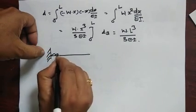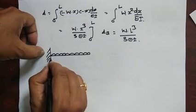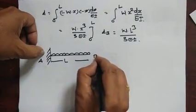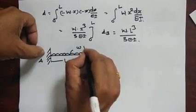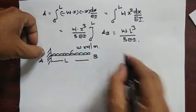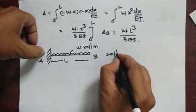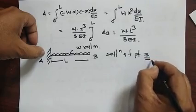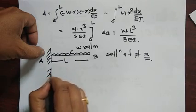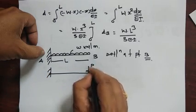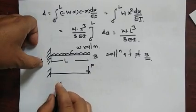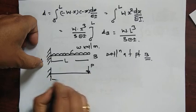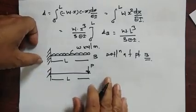Now we take another example. Suppose a cantilever beam of length L with a uniformly distributed load W per unit length. Again we want the deflection at point B. So again we apply a fictitious force P at that point in the direction in which we want the deflection.